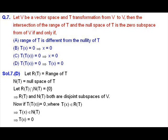We proved one direction. For the converse, assume option D holds — that is, T(T(x)) = 0 implies T(x) = 0. We will show the intersection of range space of T and null space of T is the zero set. Since T(T(x)) = 0, T(x) belongs to the null space of T and also to the range space of T, so T(x) is in their intersection. Since T(x) = 0, their intersection contains only zero. Hence option D is the only correct condition.